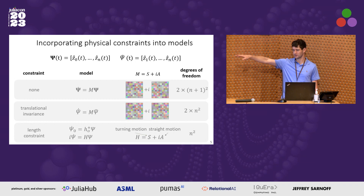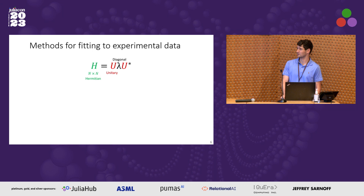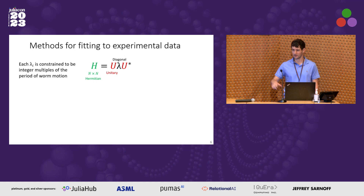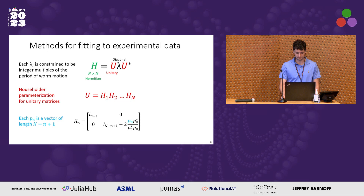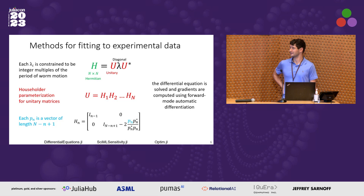To learn these Hamiltonian matrices from data, we decompose the Hermitian matrix and constrain the lambdas to be the oscillation frequencies obtained directly from the dataset. We then parameterize the unitary matrix as a product of Householder matrices, where all we need to learn are the vectors defining each Householder matrix. We do this using DifferentialEquations.jl with simple forward-mode automatic differentiation to obtain these pN vectors.